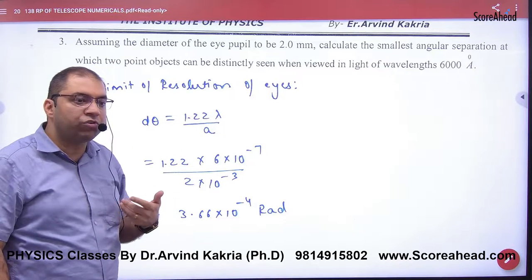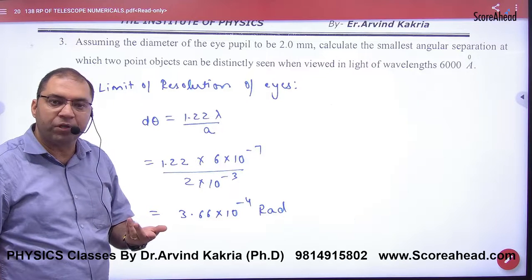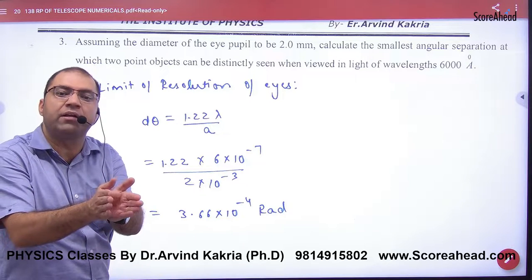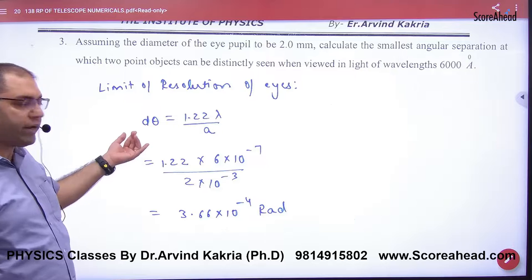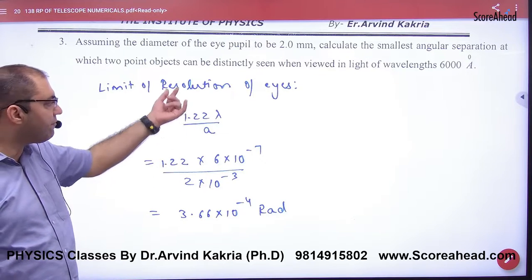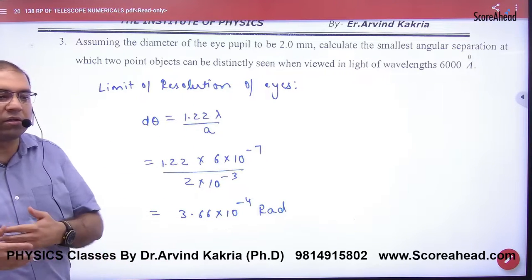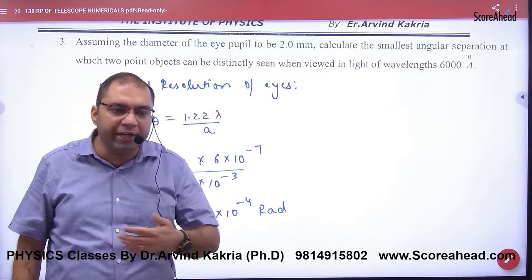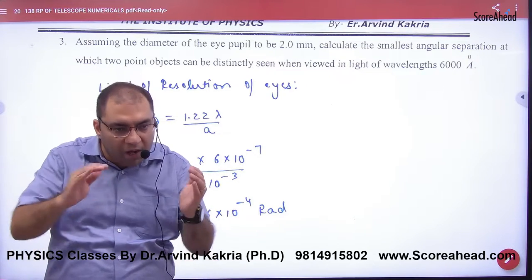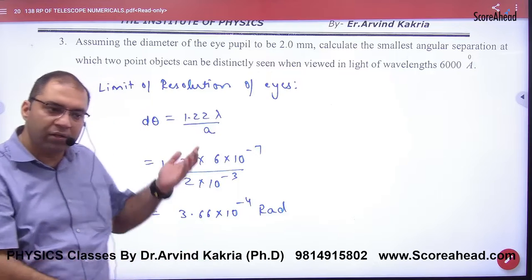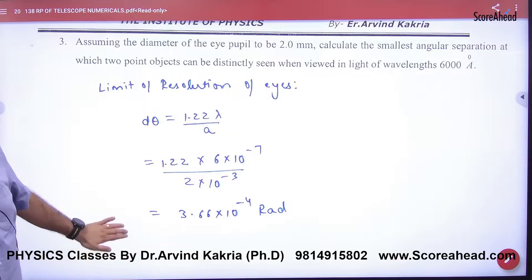He used the word resolving power. He said that the angle is distinctly seen. That means he is asking for delta theta or d theta. So d theta is what's being asked. Then the formula is the answer. That means resolving power or limit of resolution is what the question is asking for, the formula remaining the same. Okay?